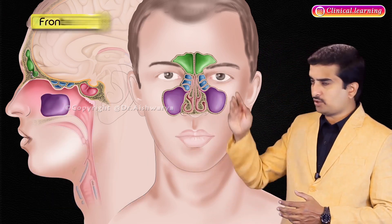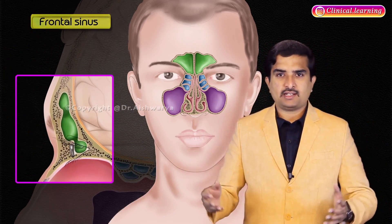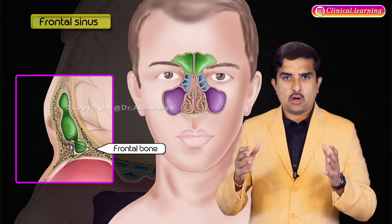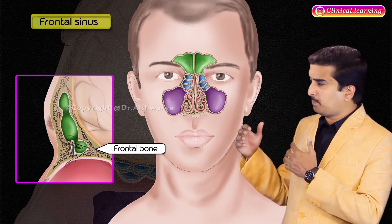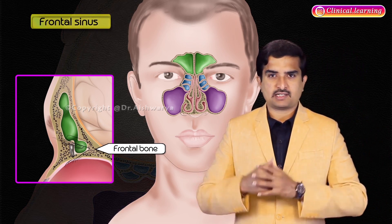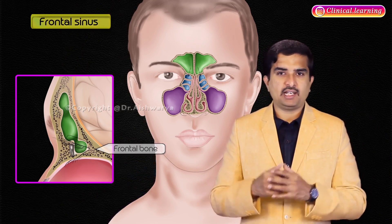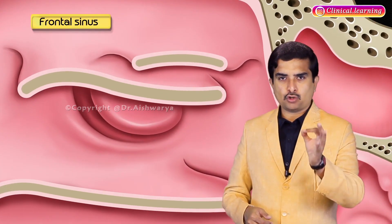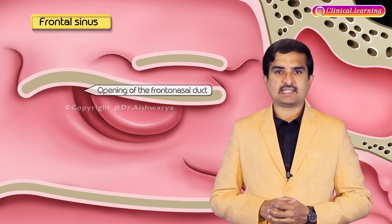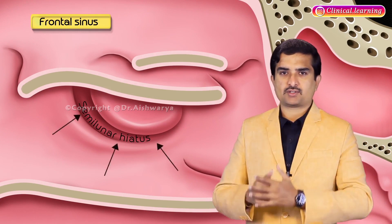The frontal sinus is located in the frontal bone along the midline, superior to the orbital openings. The frontal sinus drains into the ethmoidal infundibulum via the frontonasal duct, which opens into the nasal cavity through the semilunar hiatus.